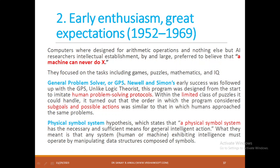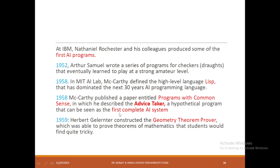They also demonstrated that computers should use a physical symbol system, which is necessary and sufficient for general intelligent action — because the human brain works on the basis of symbols. From 1952 onwards, several AI programs emerged. Arthur Samuel wrote programs for the checker game. At the MIT AI lab, McCarthy defined the high-level language LISP, which dominated the next 30 years of AI. McCarthy also published a paper describing Advice Taker, a hypothetical program considered the first complete AI system.